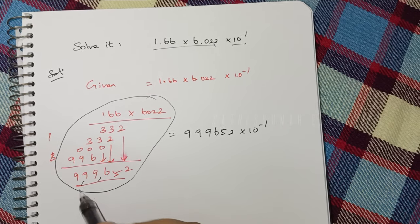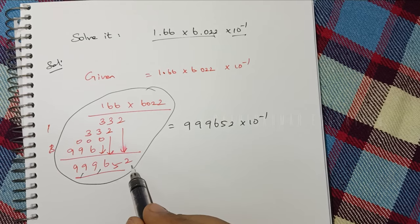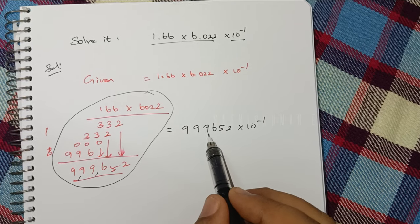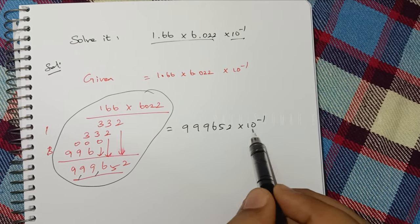If you multiply it, you will find 999,652. So 999,652 × 10^-1.